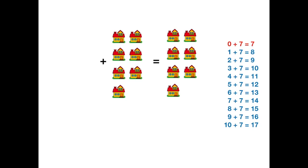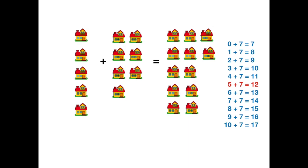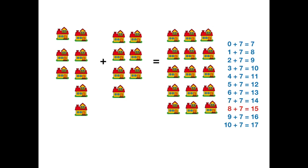Adding 7 to a number. 0 plus 7 equals 7. 1 plus 7 equals 8. 2 plus 7 equals 9. 3 plus 7 equals 10. 4 plus 7 equals 11. 5 plus 7 equals 12. 6 plus 7 equals 13. 7 plus 7 equals 14. 8 plus 7 equals 15. 9 plus 7 equals 16. 10 plus 7 equals 17. And we are all done.